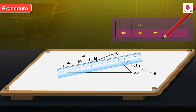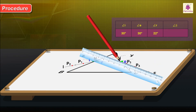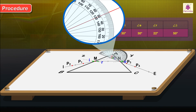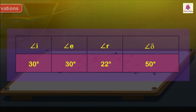Extend the incident ray IO and the emergent ray backwards until they intersect. Label the angle formed by them as delta. This is the angle of deviation. Measure the angle of deviation delta. Observations: